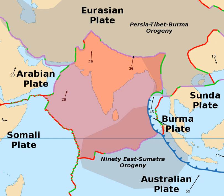The Indian plate or India plate is a major tectonic plate straddling the equator in the eastern hemisphere. Originally a part of the ancient continent of Gondwana, India broke away from the other fragments of Gondwana 100 million years ago and began moving north. Once fused with the adjacent Australia to form a single Indo-Australian plate, recent studies suggest that India and Australia have been separate plates for at least 3 million years and likely longer. The Indian plate includes most of South Asia—the Indian subcontinent—and a portion of the basin under the Indian Ocean, including parts of South China and Western Indonesia, and extending up to but not including Ladakh, Kohistan and Baluchistan.